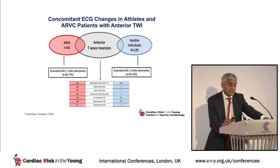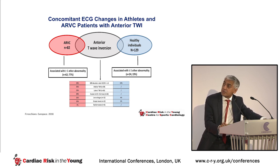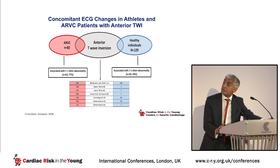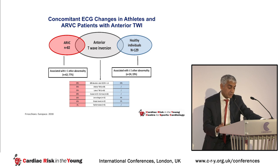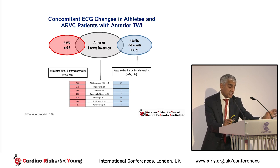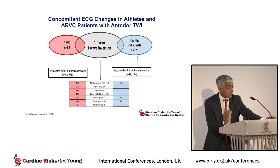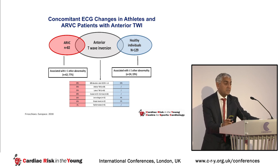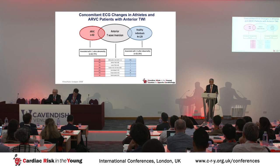In white athletes, look for other anomalies alongside T wave inversion. Data from Gerardo's study of 82 individuals with ARVC and 129 healthy individuals with T wave inversion in V1 to V4 — including around 70 athletes — showed that people with ARVC have more than one anomaly: 62% have anterior T wave inversion but also inferior or lateral T wave inversion, delayed upstroke of the S wave, epsilon waves, ventricular premature beats, or low voltage. When seeing a white individual with T wave inversion not preceded by J-point elevation, always look for these additional anomalies.